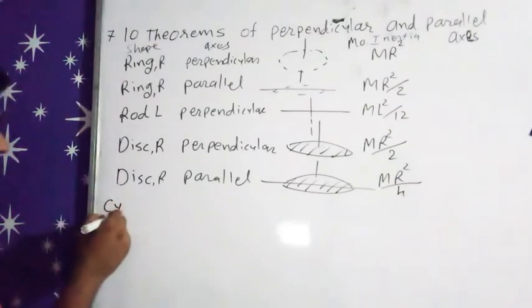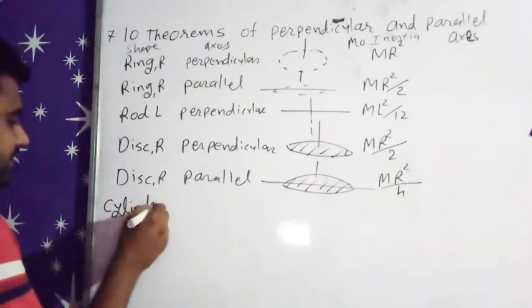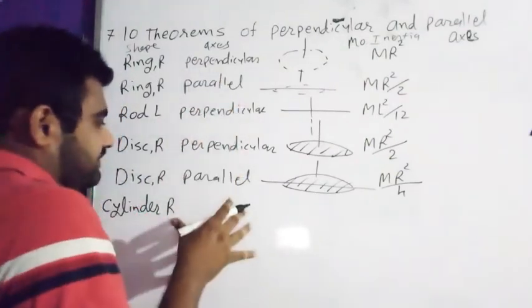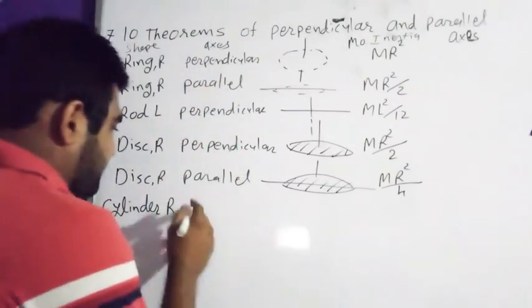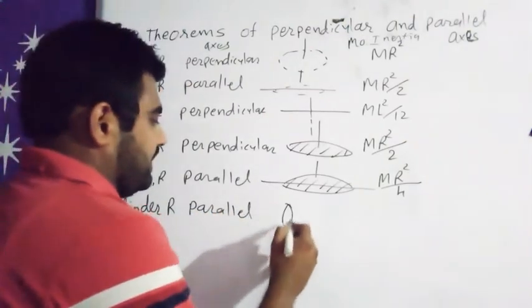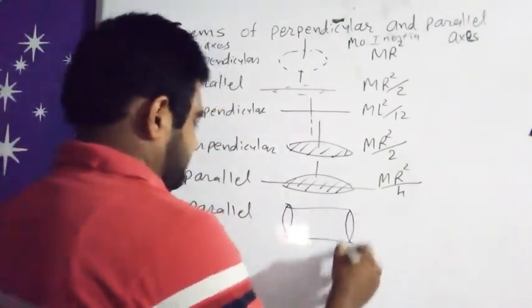Now we are moving on to cylinder. Cylinder radius R, again the axis is parallel. So axis is parallel, but this cylinder, remember, this cylinder is hollow cylinder.